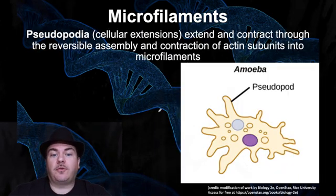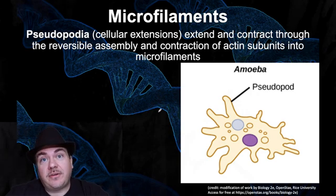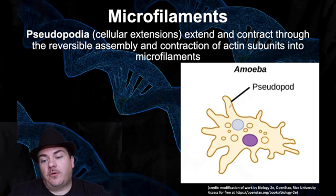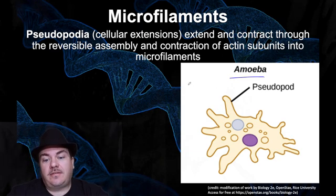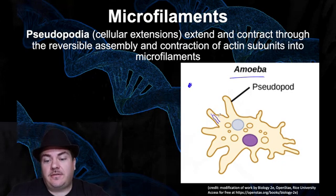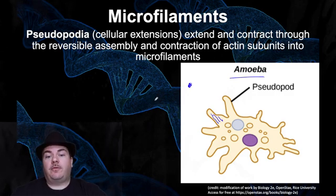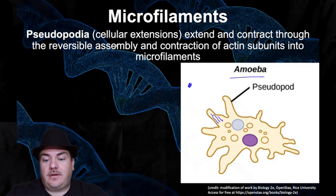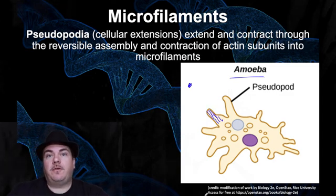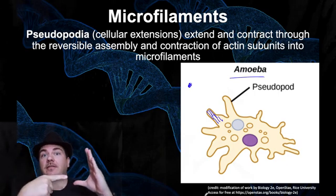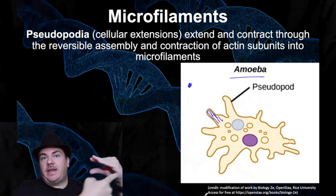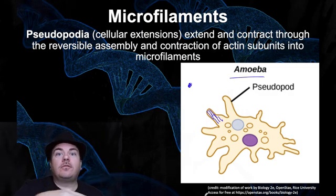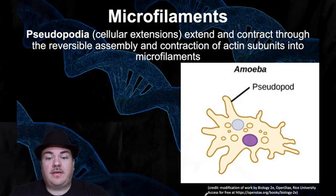Another use of actin microfilaments is creating pseudopodia, a term meaning false feet. An amoeba needs to move but doesn't have legs. When it senses food nearby, it lines up its actin microfilaments in the direction it wants to crawl and grows them longer. The growing actin microfilaments push the plasma membrane outward, creating a pseudopod — a false foot — and that's how the amoeba crawls toward its target.